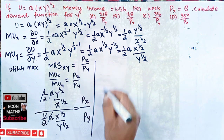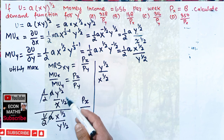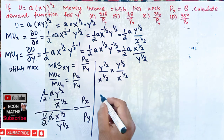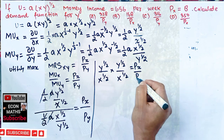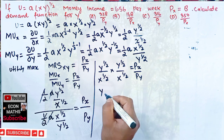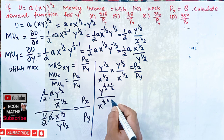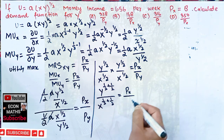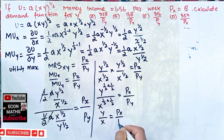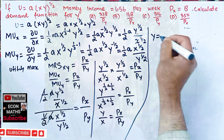After cancellation, we are left with Y^(1/2) / X^(1/2) divided by 1/Y^(1/2), which simplifies. Transposing the denominator term, we get Y^(1/2 + 1/2) / X^(1/2 + 1/2) = Px/Py. Since 1/2 + 1/2 = 1, this gives us Y/X = Px/Py, or equivalently Y = (Px/Py) · X.